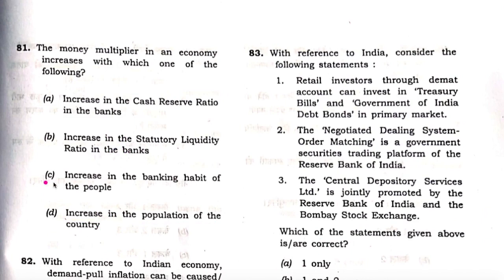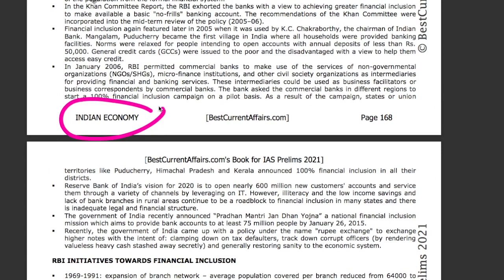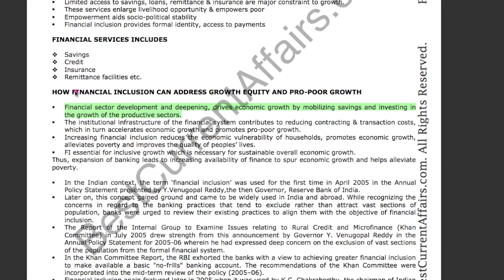Option C — increase in the banking habit of the people — is correct. When people save more in their bank accounts, it increases the bank's capacity to give more loans into the economy, thus increasing the money multiplier. From our Indian economy booklet, page 168, on financial inclusion: financial inclusion drives economic growth by mobilizing people's savings and investing these savings into the growth of other productive sectors. Therefore, C is the answer and the question is solved.